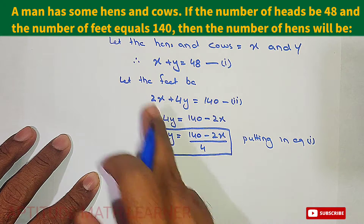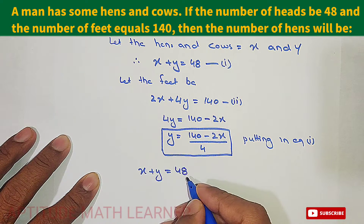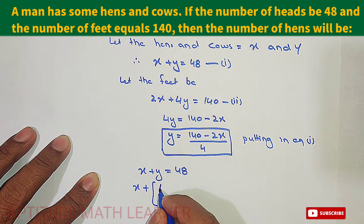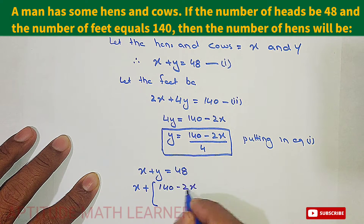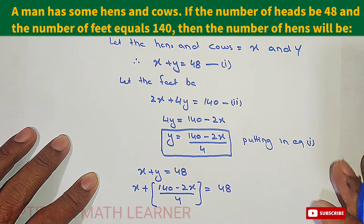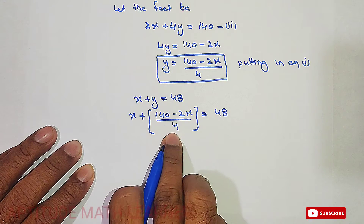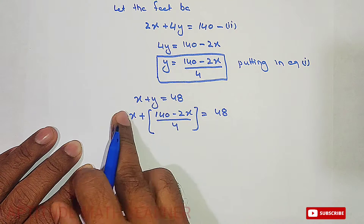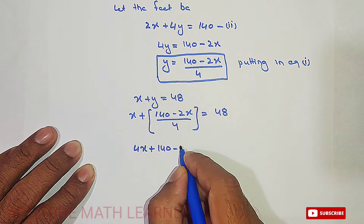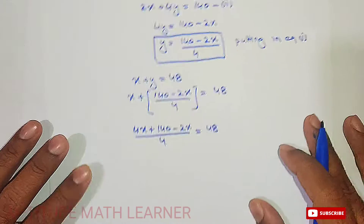Equation one is x plus y equals 48. Substituting the value of y, we get x plus (140 minus 2x) divided by 4 equals 48. Multiplying through by 4 as the LCM, this becomes 4x plus 140 minus 2x divided by 4 equals 48.